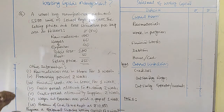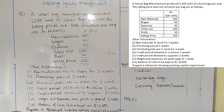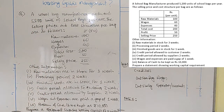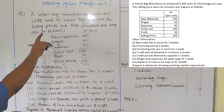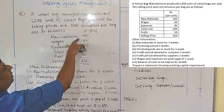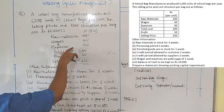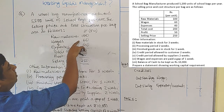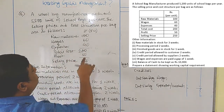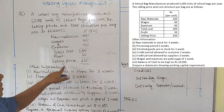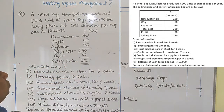Let us take an example. A school bag manufacturer produces 50 to 100 units of school bags per year. The selling price and cost structure per bag are as follows: materials is 100, wages is 60, expenses is 40. Total cost of the bag is 200 rupees, and the company charges a profit of 50 rupees, giving a total selling price of 250 rupees.